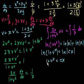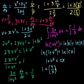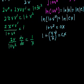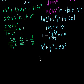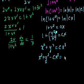Now we can unsubstitute. We know v equals y over x, so we get 1 plus y over x squared equals cx. Multiplying both sides by x squared — since y over x squared is y squared over x squared — we get x squared plus y squared equals cx cubed. Putting all variable terms on the left-hand side: x squared plus y squared minus cx cubed equals 0.